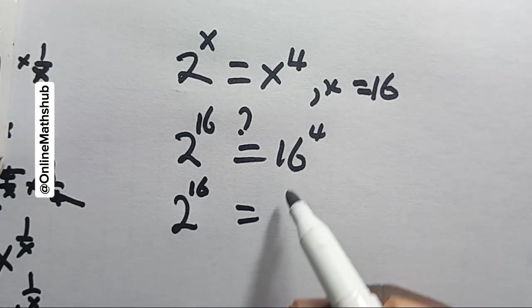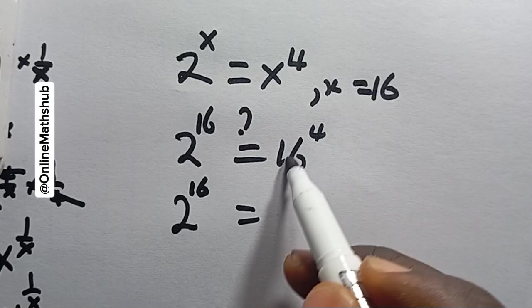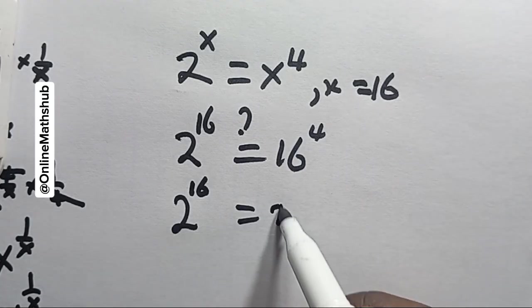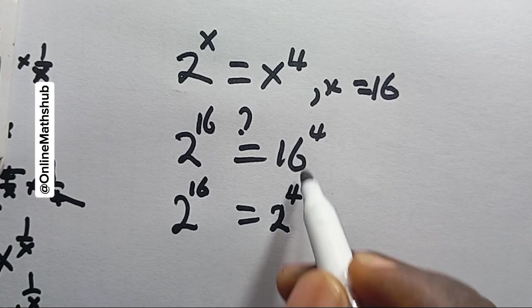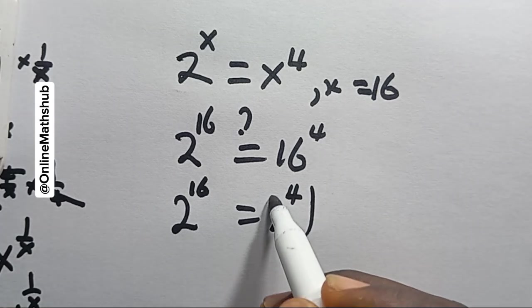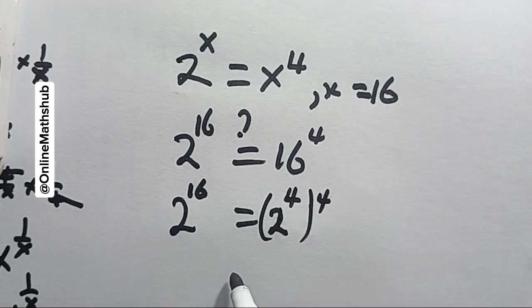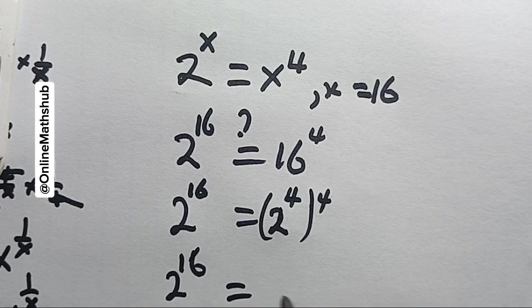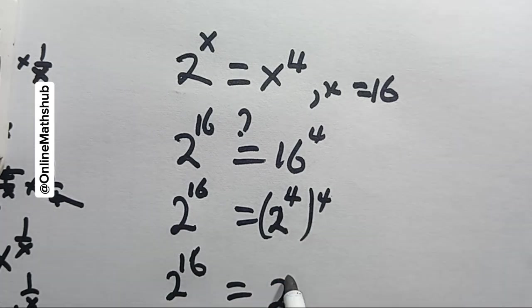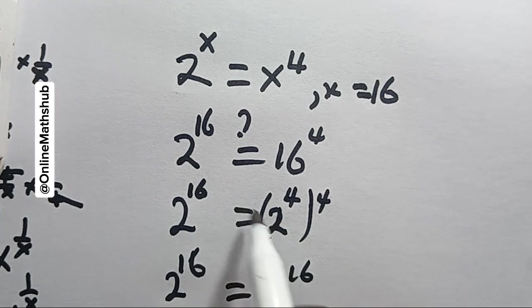I can rewrite 16 here as 2^4, and I'll use this 4 to multiply what is on top right there. Eventually you see that 2^16 is the same as 2^(4 × 4), which is 16. So that satisfies the equation we just solved.